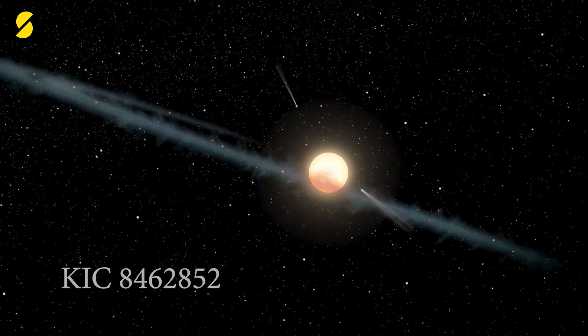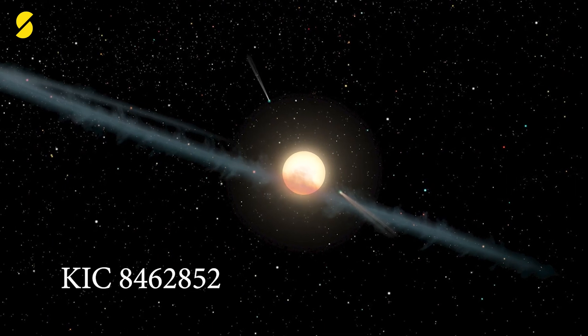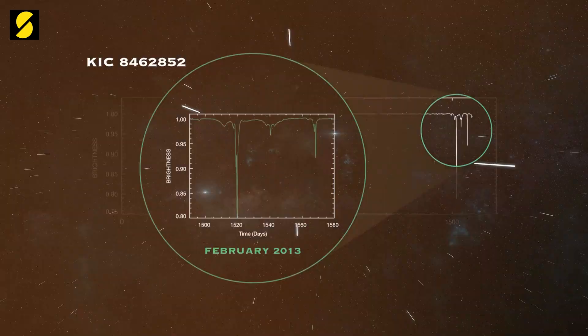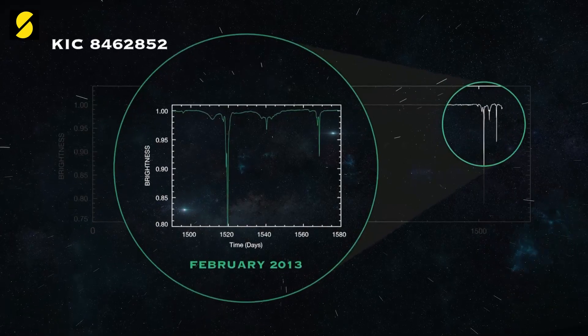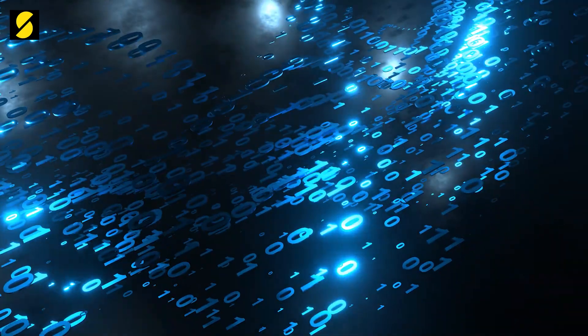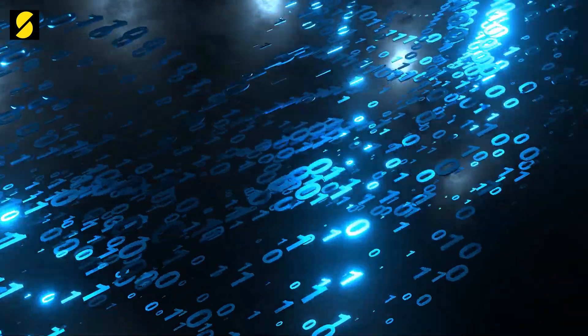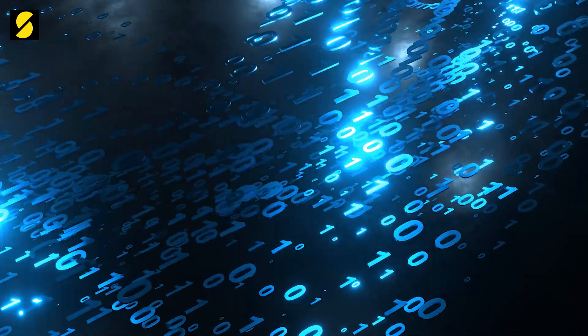Secondly, the dips of Tabby's star, named after the scientist who found it, might look irregular, but are they really? What if there is a message encoded in them? What if they are trying to get our attention?